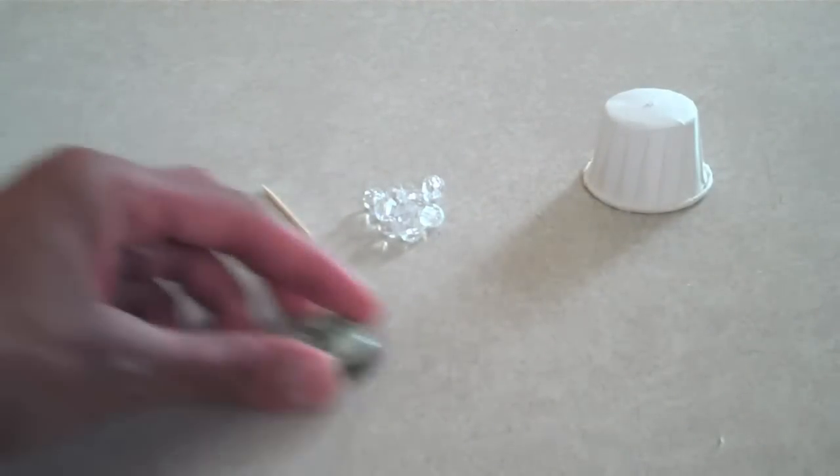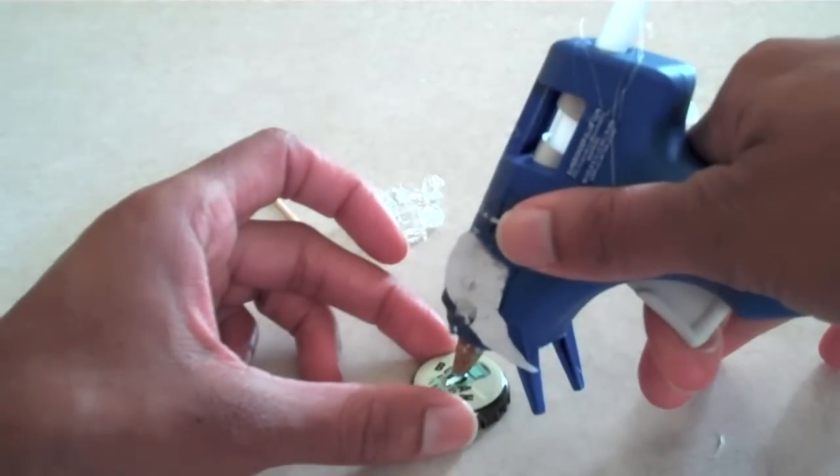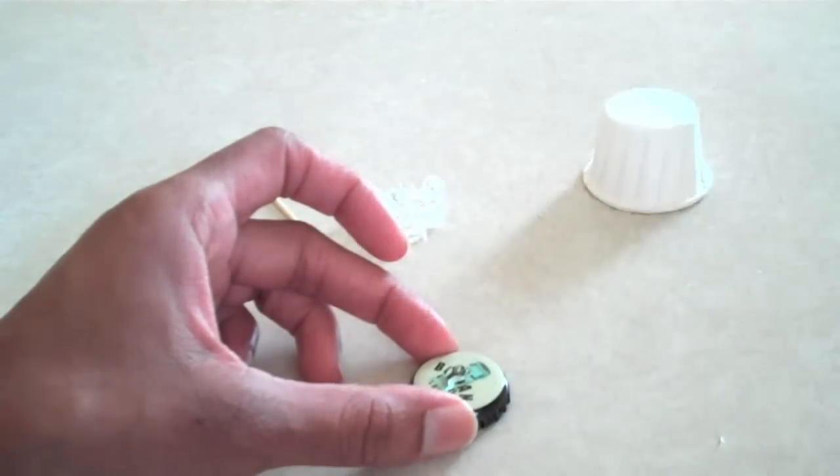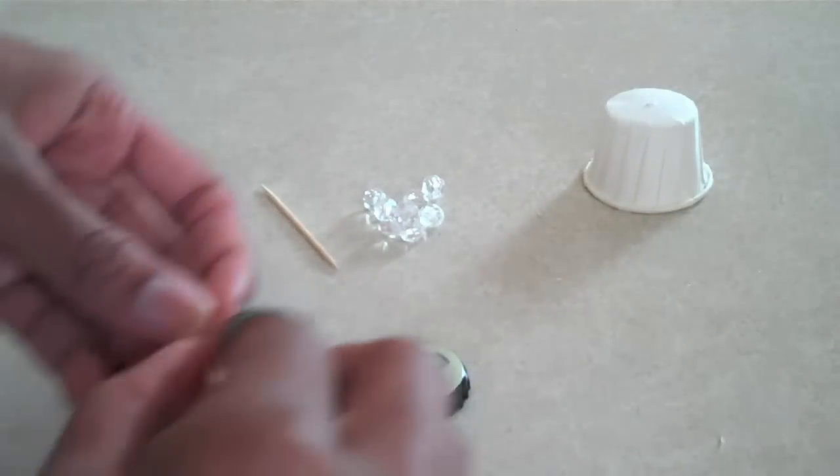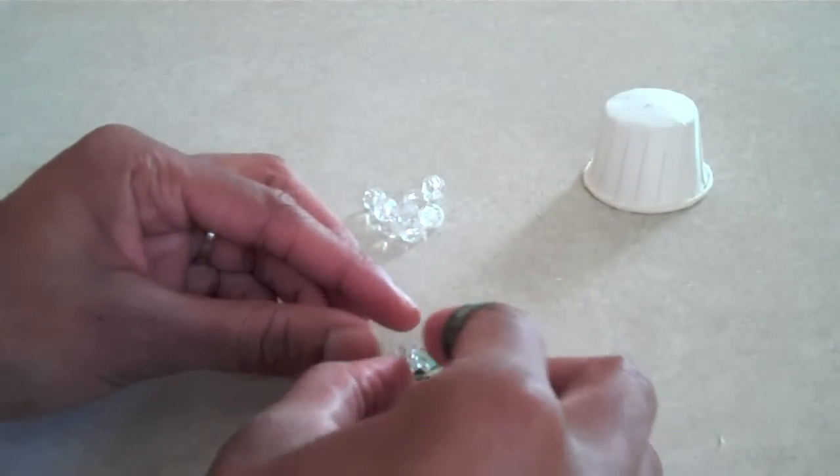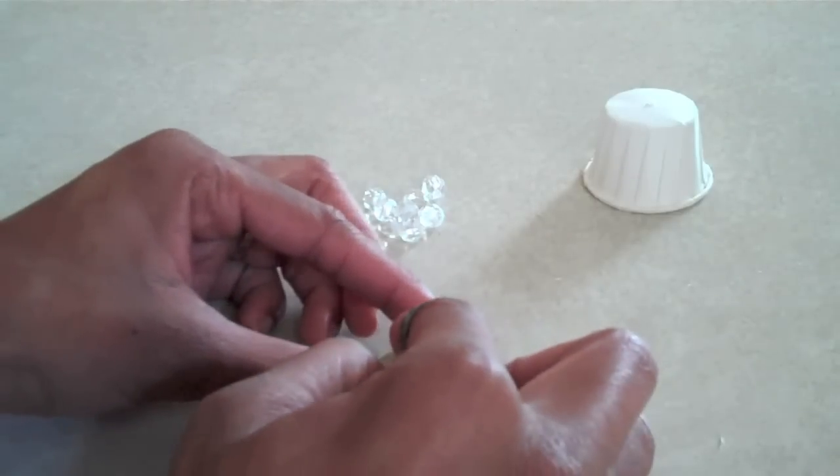First, you're just going to take your hot glue gun, put some glue right there in the middle on top of your bottle cap, and you can totally go outside and spray paint your bottle caps beforehand if you want them in different colors or metallics and stuff. I'm just going to use it like this.